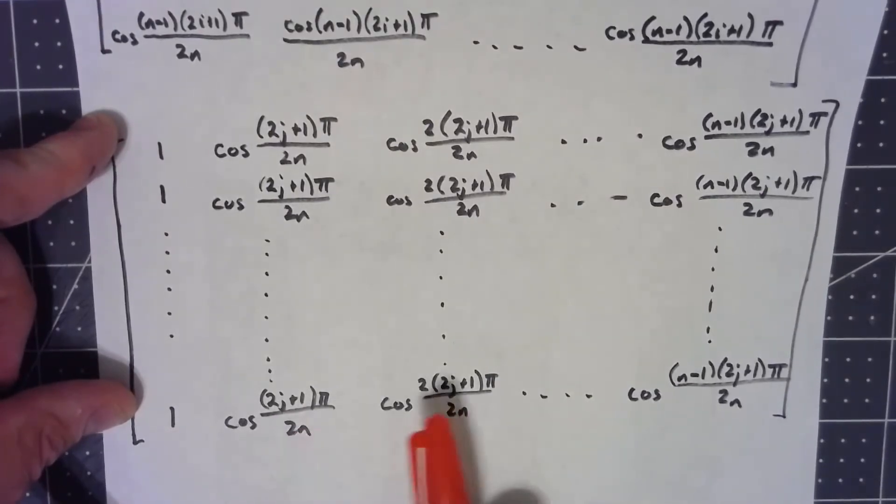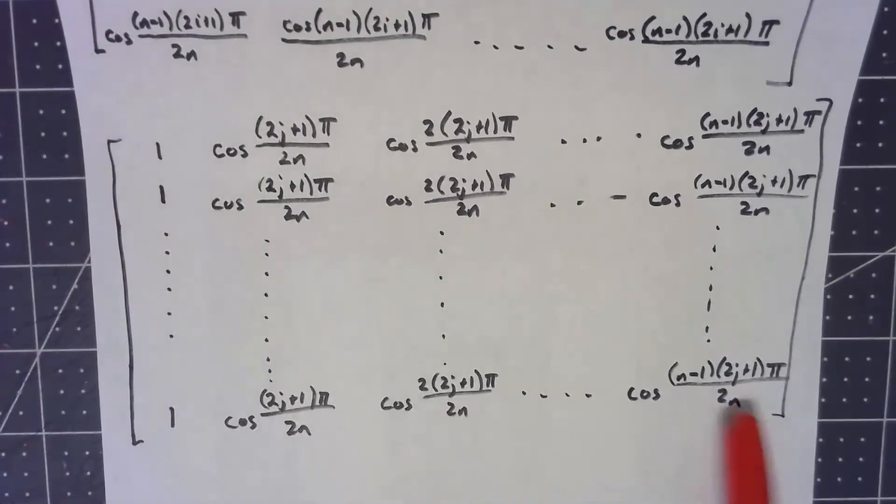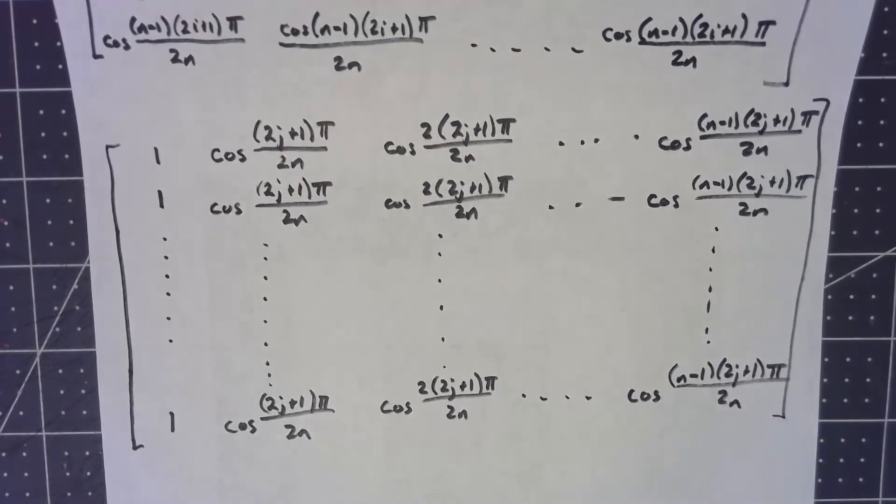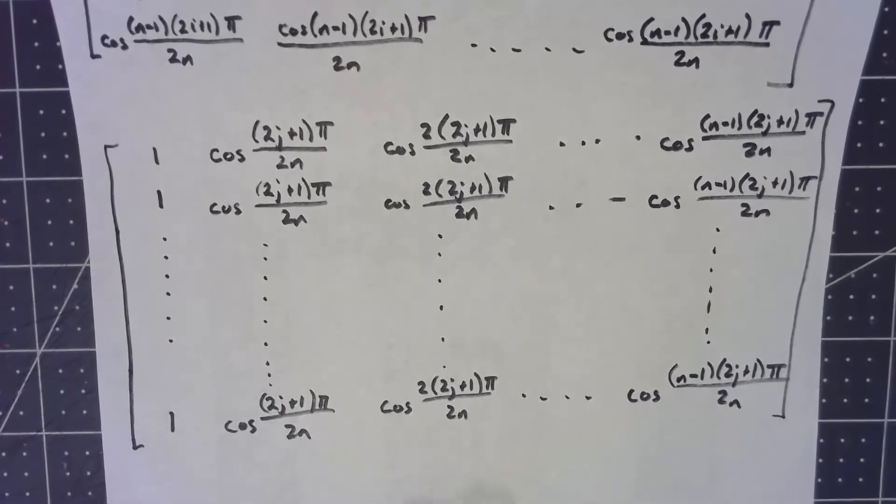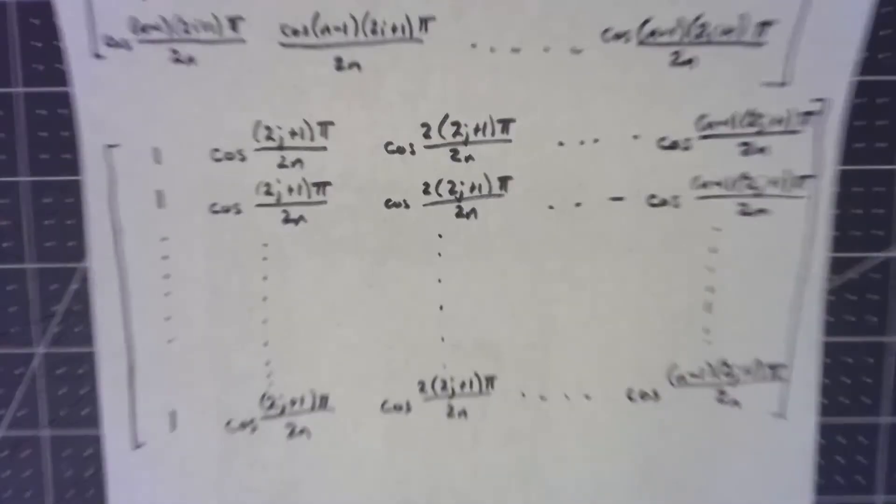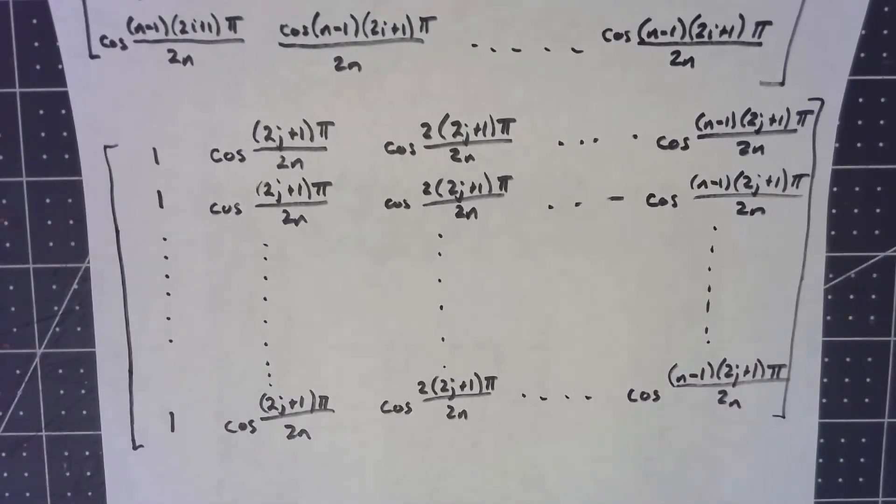So all together, you're getting n squared different terms in this huge summation, all of which are constants pulled out of the DCT, constants from the formula, and then a couple of cosine functions. It's a big mess.